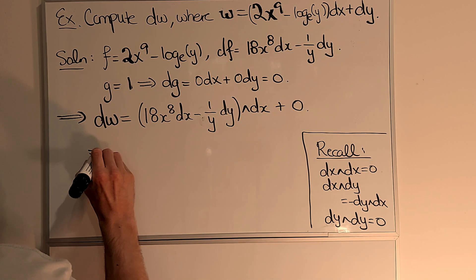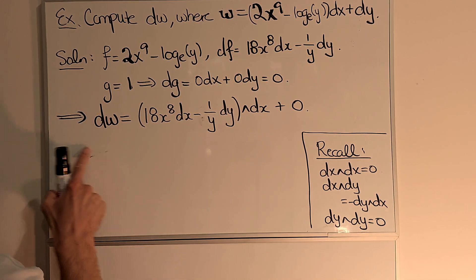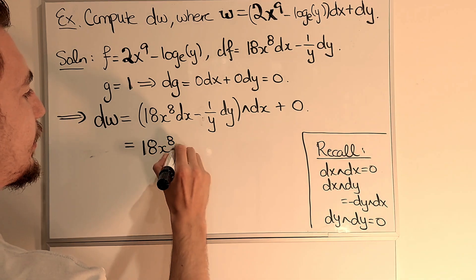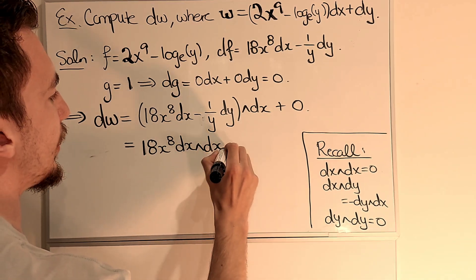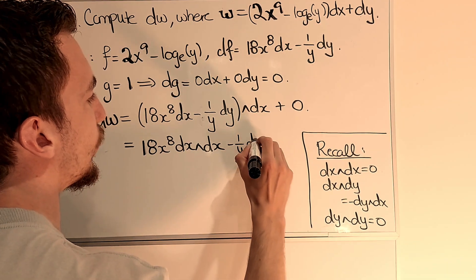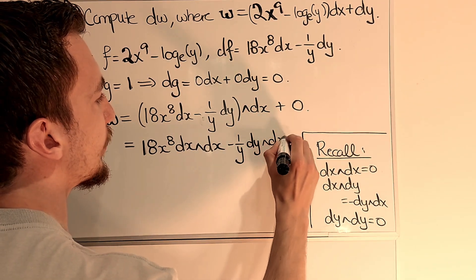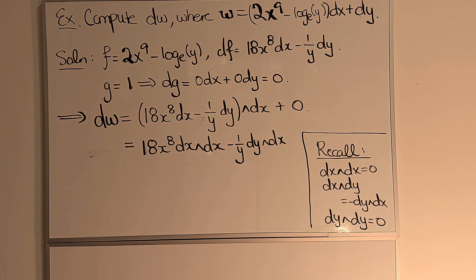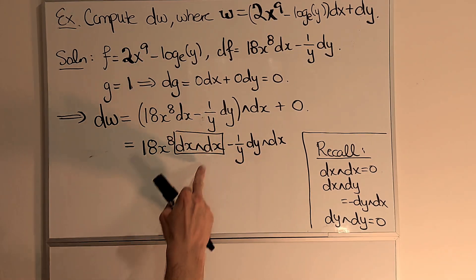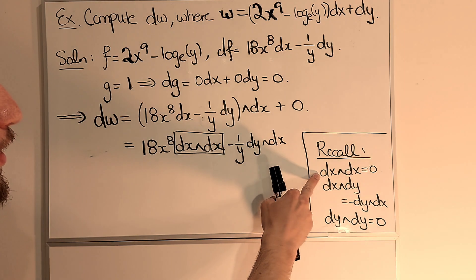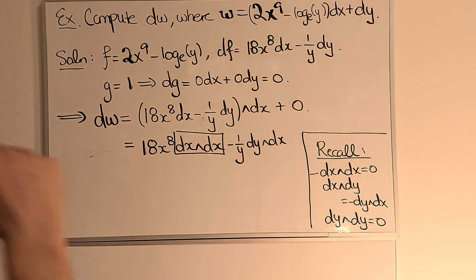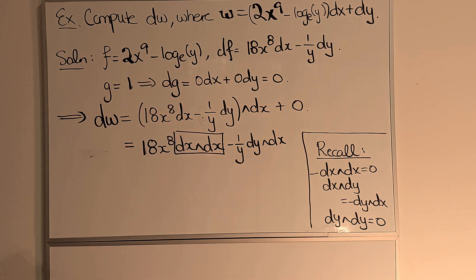Now if I expand this out, what I get is 18x to the 8 dx wedge dx minus 1 over y dy wedge dx. But now we see we have a dx here, and the nilpotence property, which is this first property here, tells us that dx wedge dx is 0.